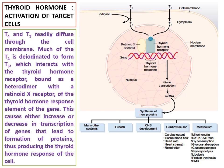The binding of the thyroid hormone induces a conformational change in the receptor, leading to dissociation of the corepressor complex from the receptor, thereby allowing an activator complex consisting of thyroid hormone, thyroid hormone response element, and co-activator. This causes either an increase or decrease in the transcription of genes that lead to the formation of proteins.